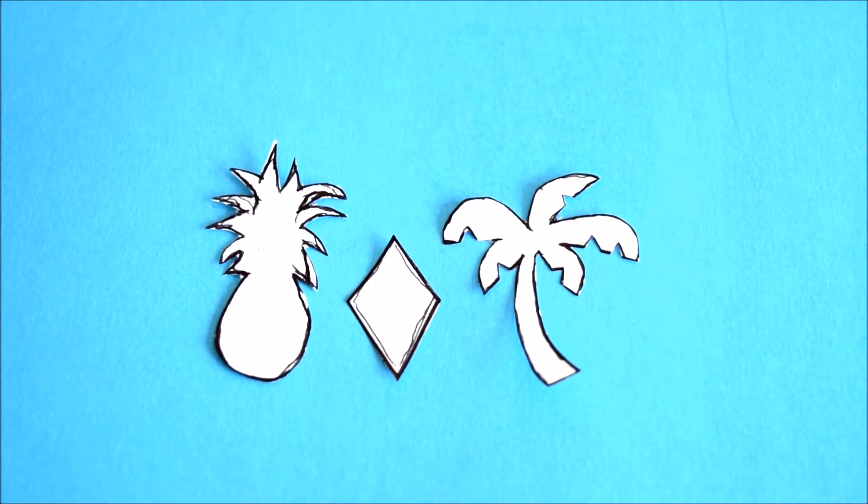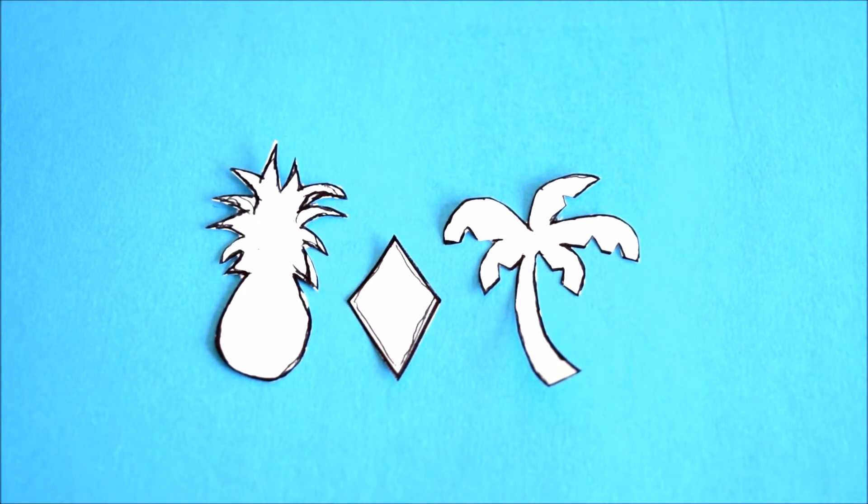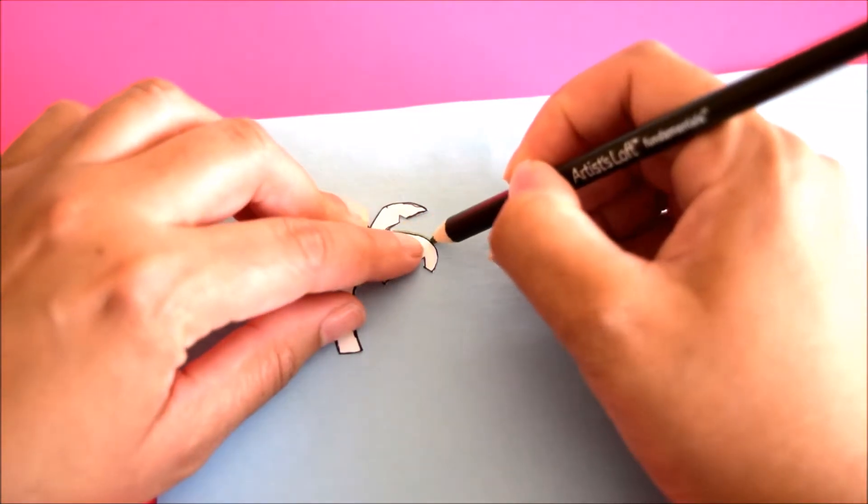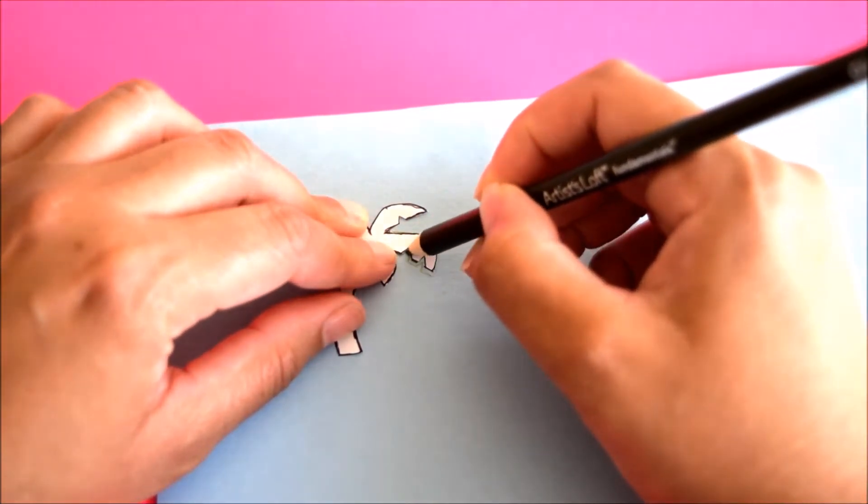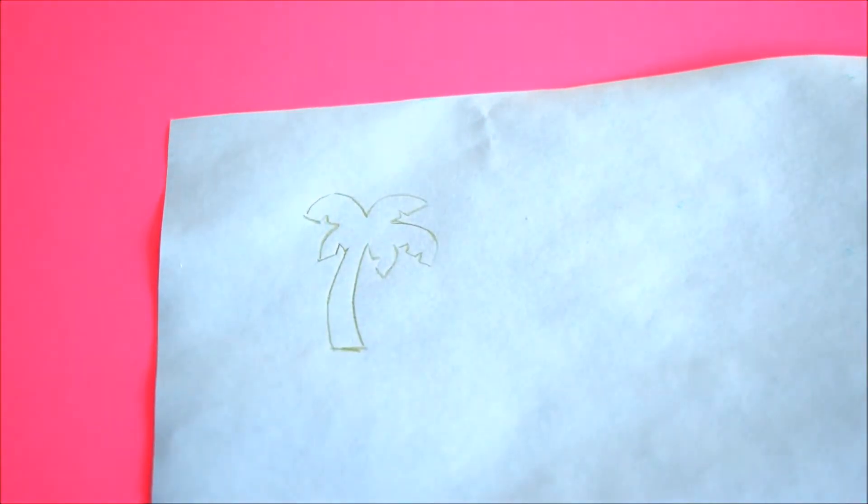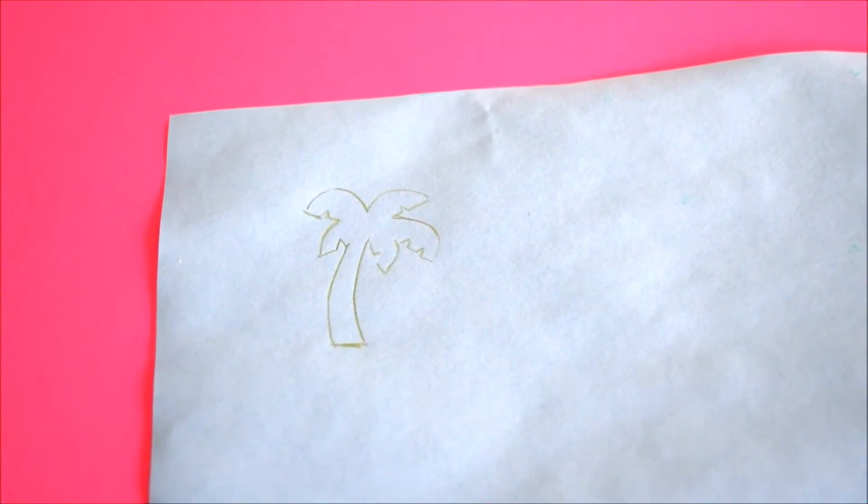So the first thing you want to do is print out the template. This first one is a palm tree. I just went online to Google and searched up palm tree images and then made it to the appropriate size. Then you're just going to trace it onto the paper or whatever you're going to be putting it on.